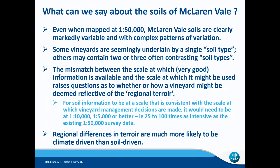That mismatch raises important questions as to whether or how a vineyard might be deemed reflective of the regional terroir, certainly in the context of its soils. There was some nice work done in New Zealand by Alan Palmer and colleagues at Massey University which showed that soil information needs to be at a scale of 1:10,000 or 1:5,000 or even better — in other words, 25 to 100 times as intensive as the existing data we have available. That obviously adds to the soil complexity.